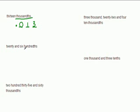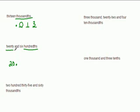Twenty and six-hundredths: six-hundredths needs to end in the hundredths place value. So we have twenty and — because it's 'twenty and' — so it's twenty, then a decimal point. Six-hundredths means we have tenths then hundredths, so it has to be six here with a zero as a placeholder.